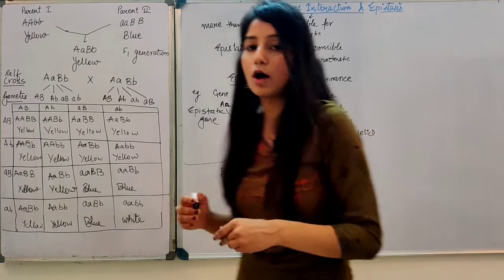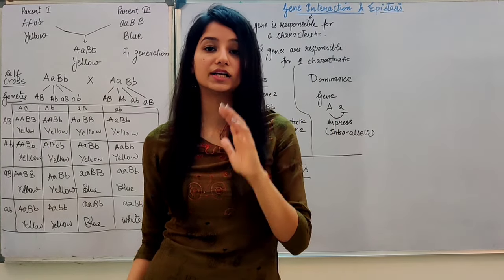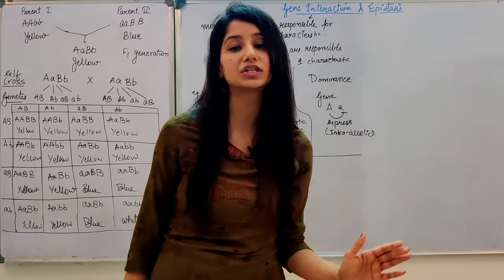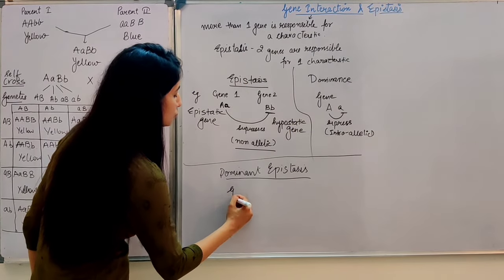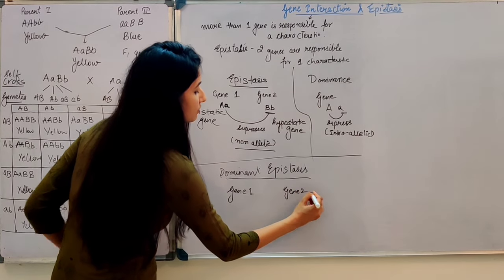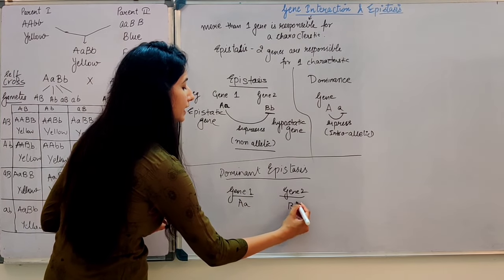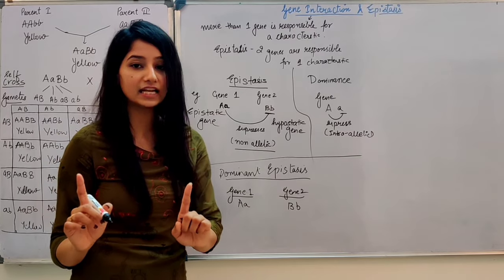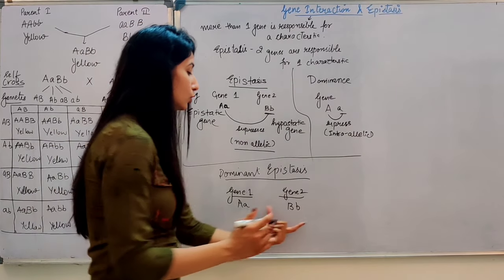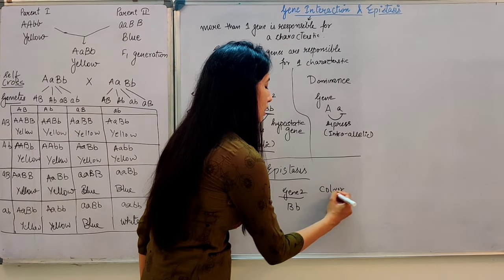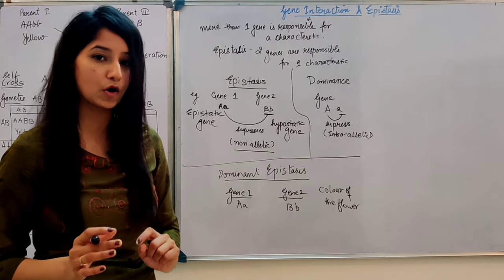What happens in dominant epistasis? The dominant allele suppresses the other gene. We have Gene 1 and Gene 2 — Gene 1 has two alleles A and Gene 2 has two alleles B. For example, the color of the flower is responsible for these two genes.